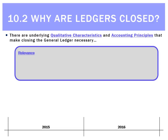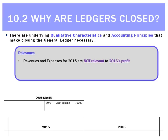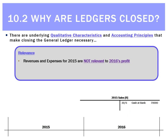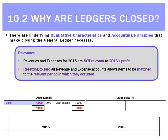What qualitative characteristics and accounting principles tell us to do this? One is relevance. Relevance says that revenues and expenses for 2015 are not relevant to 2016's profit. For example, sales of $70,000 in 2015 should not be carried forward into 2016. Instead, we close it down, reset the balance to zero, giving a fresh blank sales ledger for 2016. This helps calculate accurate profit for 2016 and supports better decision-making — which is the crux of relevance.